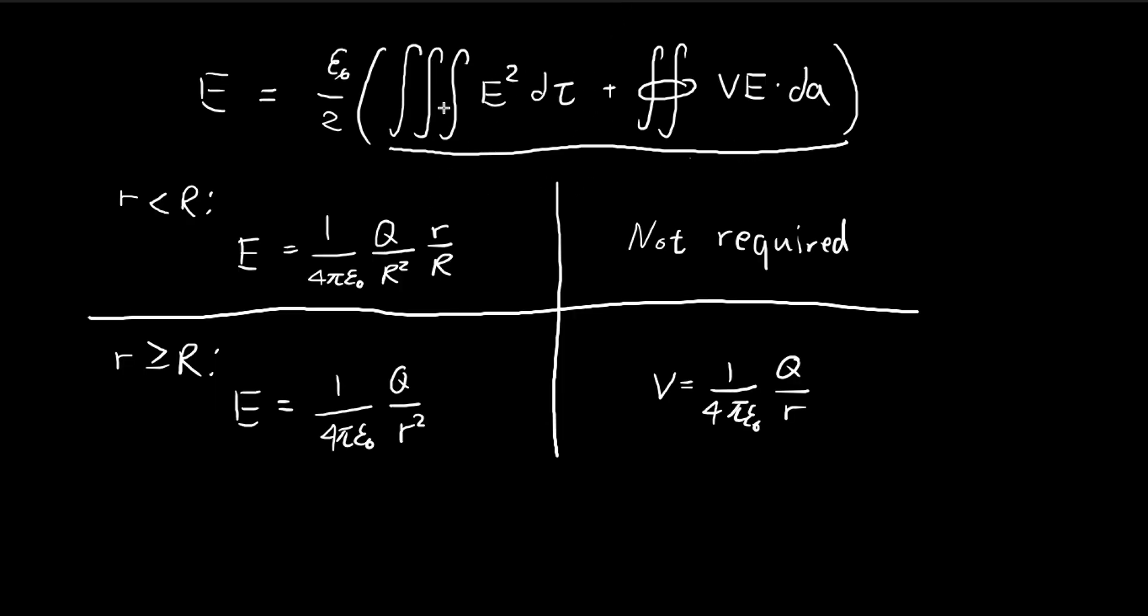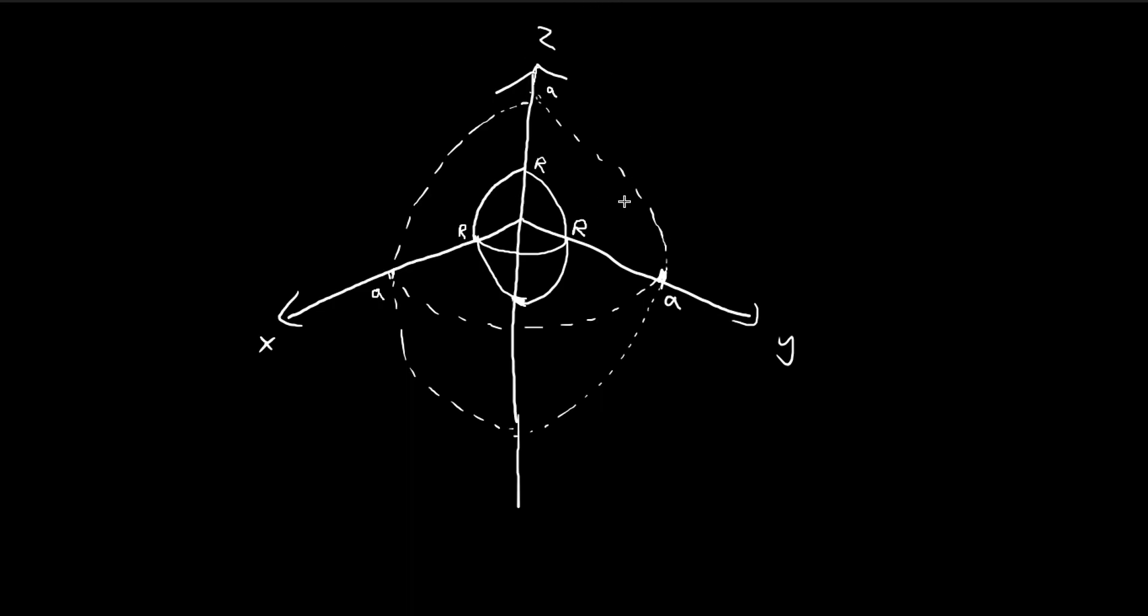So now we move on to the third method of finding the amount of energy required to construct a uniformly charged sphere. So in this method we have two components, and then we're going to integrate along this spherical shell with radius a.